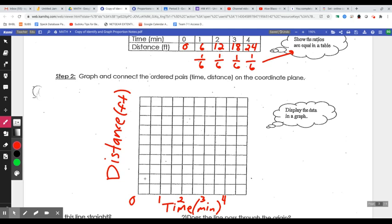For distance, we have to get up to 24. So could we go up by twos? 2, 4, 6, 8, 10, 12, 14, 16, 18. No. So let's go up by threes. So 3, 6, 9, 12.